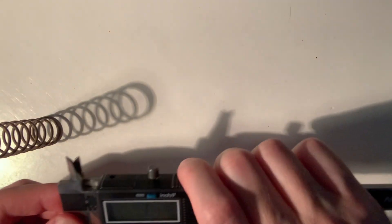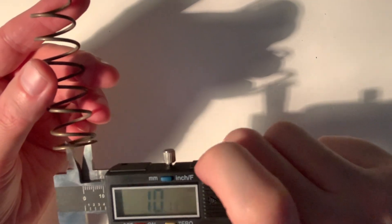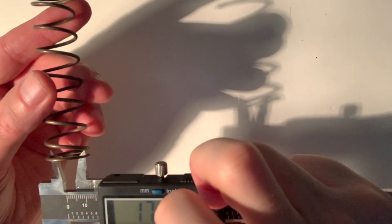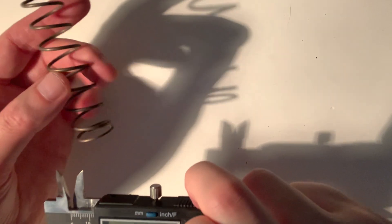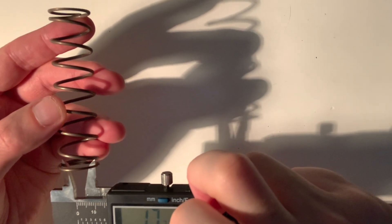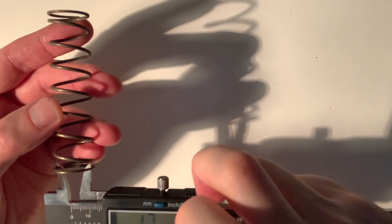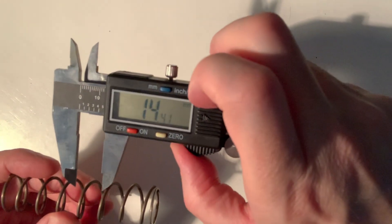So let's check the inner diameter here. 17.8, so that's very similar. Let's do it from this end: 17.7, 17.8. Now let's check the diameter of the coil.